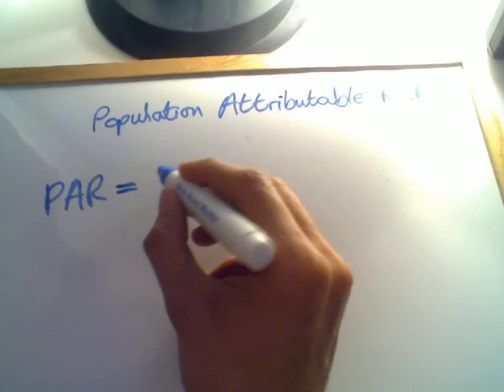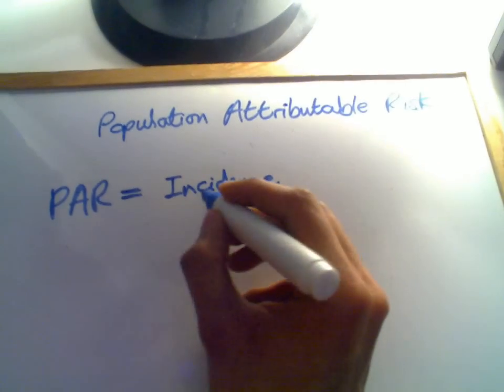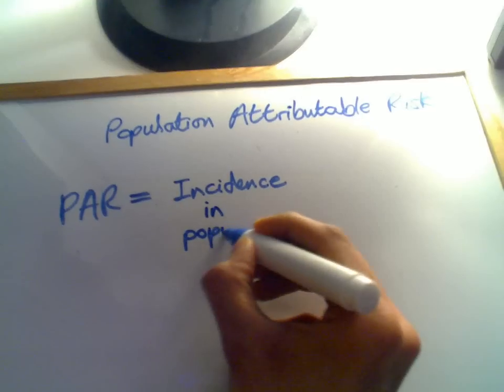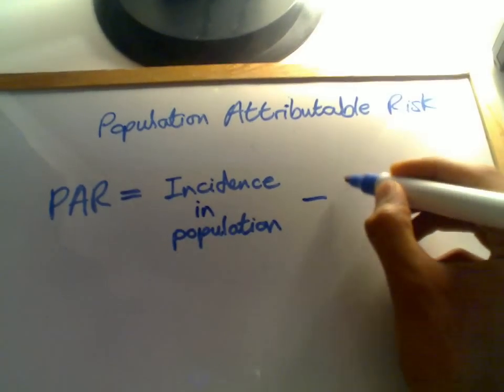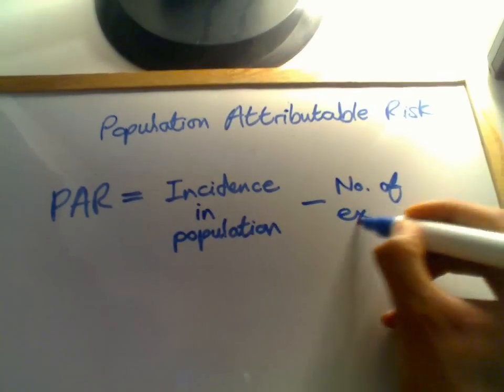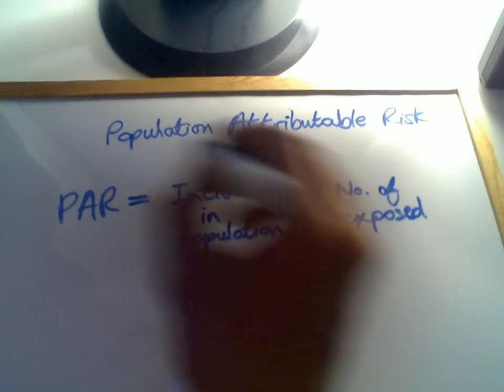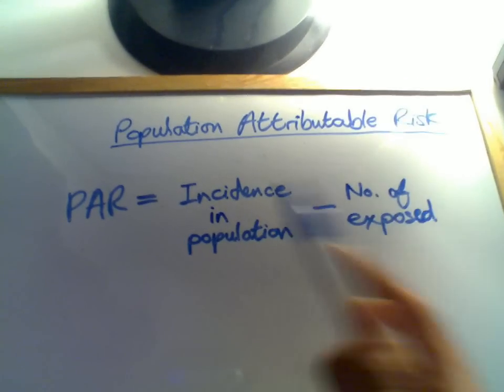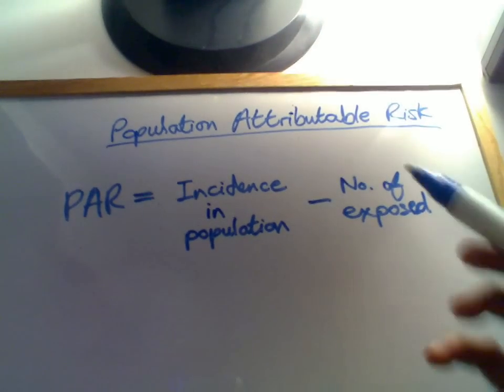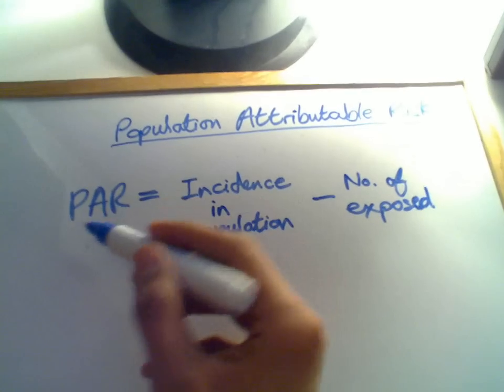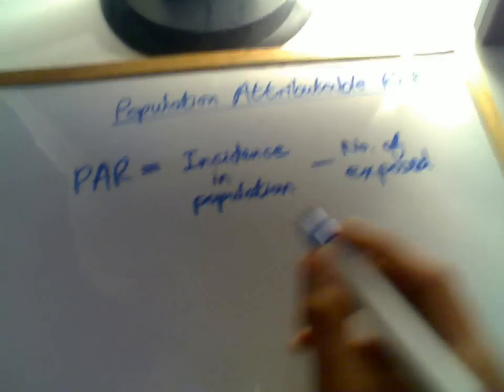We want to measure the amount of disease that is statistically attributable to our exposure. So in order to do that, it's quite simple. We just take the incidence of the disease in our population and we'll minus the number of people who are unexposed. So let's say we think smoking causes lung cancer and we want to see how much of smoking is statistically attributable to lung cancer. We take the incidence of lung cancer in the whole population and we minus the number of people who have lung cancer and don't smoke. Therefore, we've got the population attributable risk, the amount of the population who can attribute their cancer to the risk of smoking.